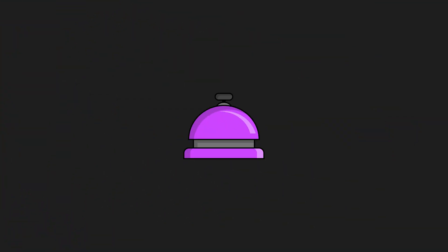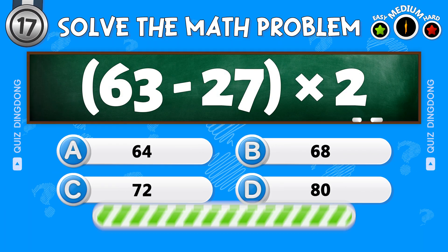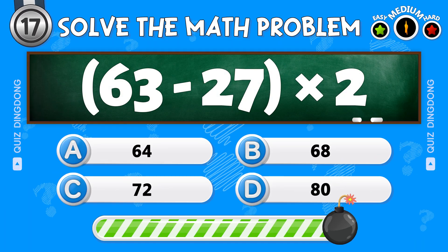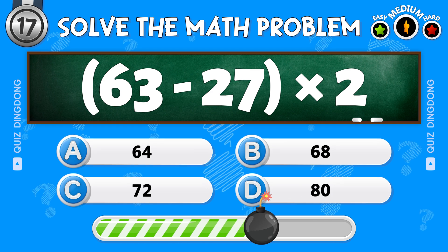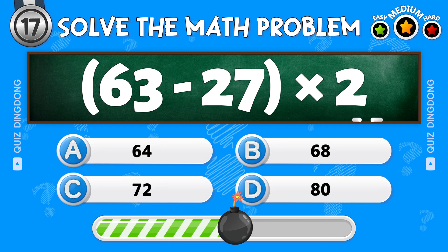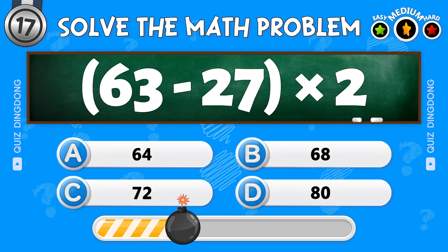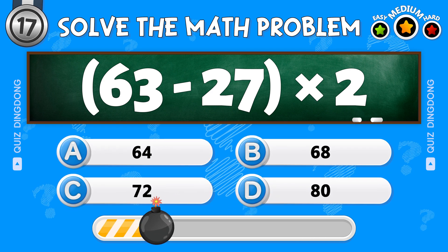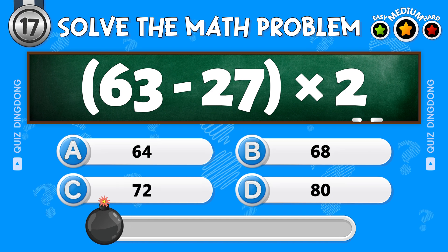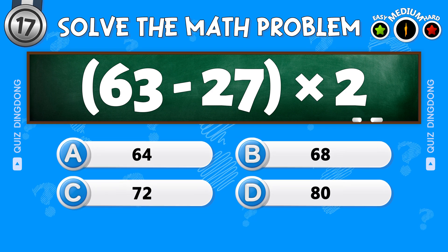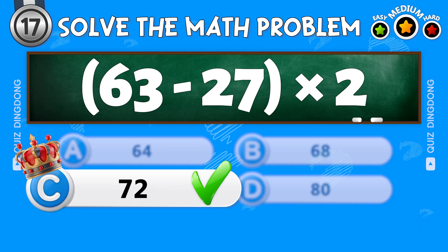What's next? Solve this! What's 63 minus 27 times 2? Great work! The answer is 72!